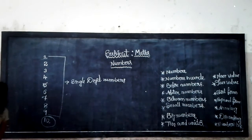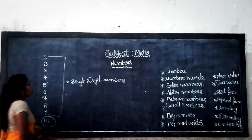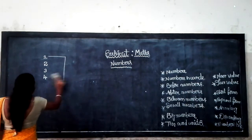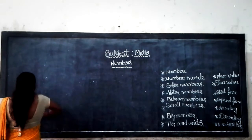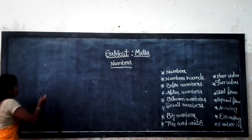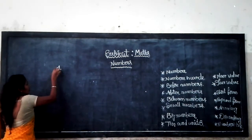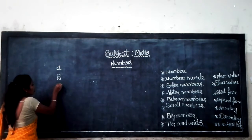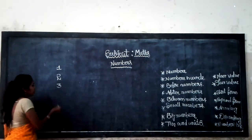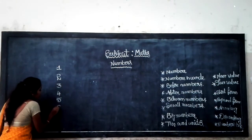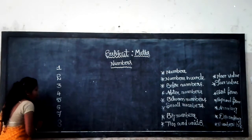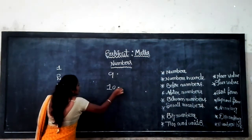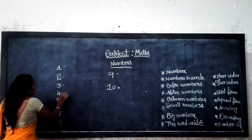Next, we will look at numbers in words — how to write numbers and how to write numbers in words. We will go through number 1 through 10.